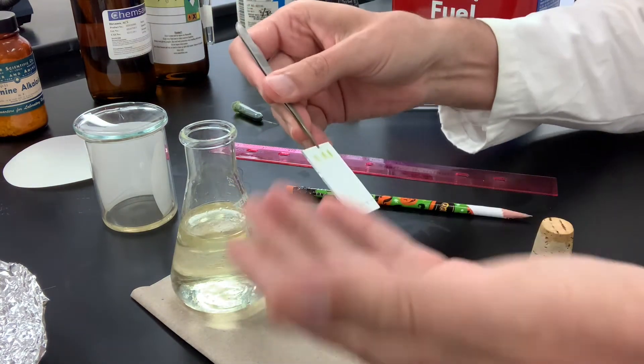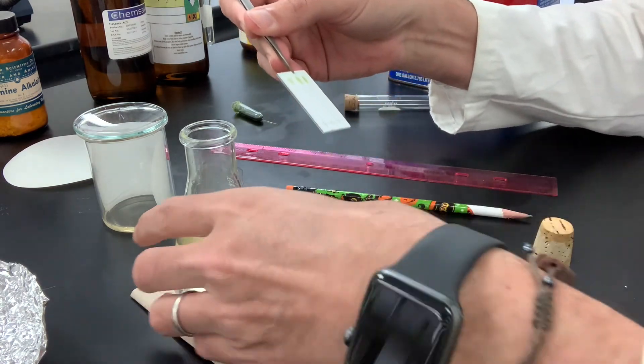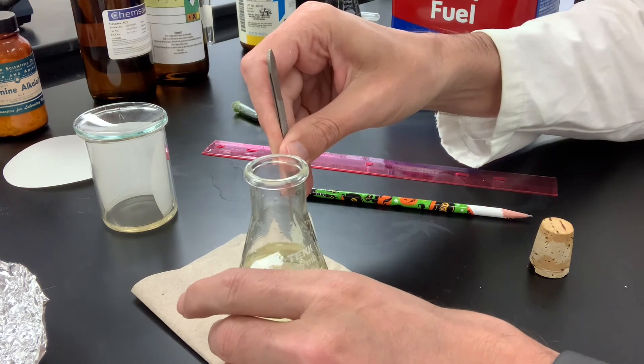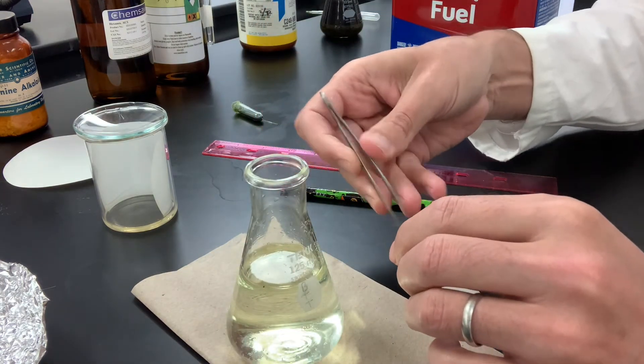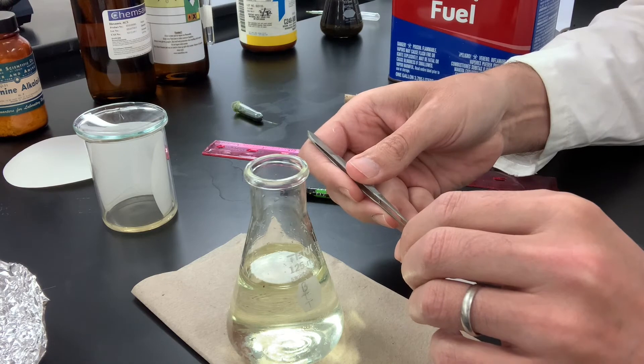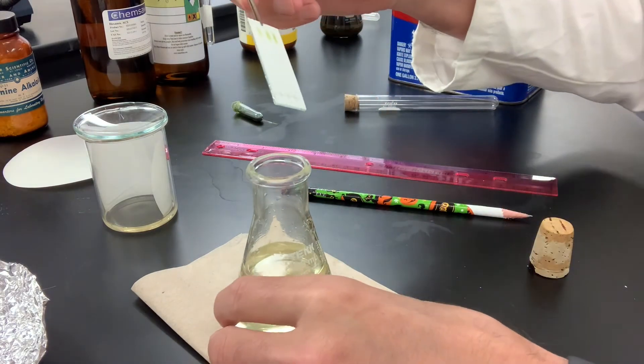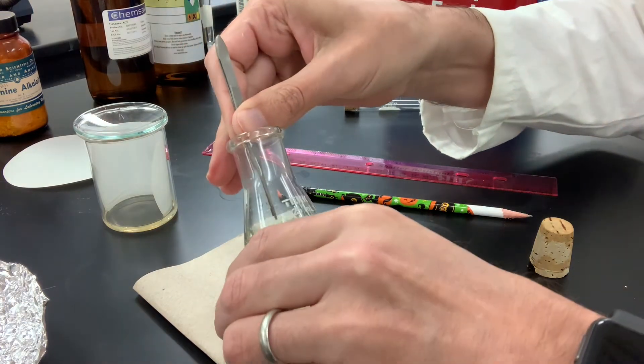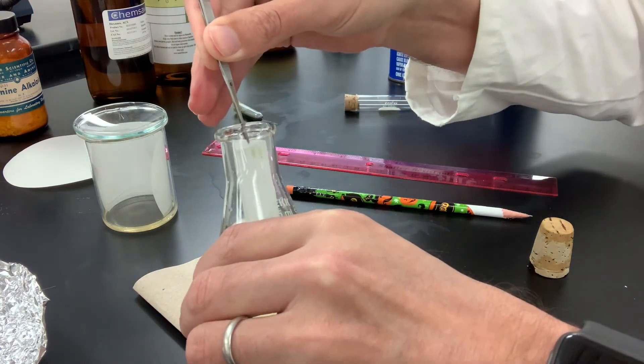Not everything's colored. These vinca alkaloids are colorless, so we want to dip this into the TLC developing solution to get those pink, purple, green, blue spots that were mentioned in the research paper. So we'll insert this in here. We'll pull this out.